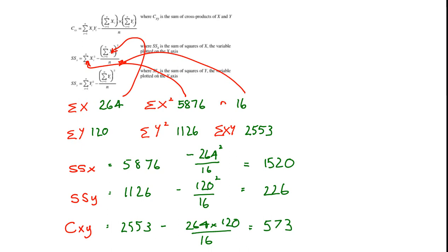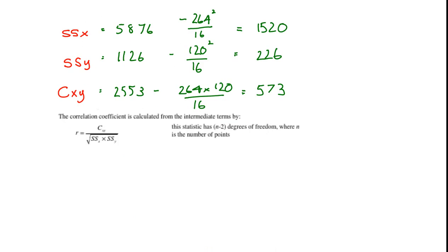Sum of squares x, 1520. Sum of squares y, 226. Covariance xy, 573. And those are the important numbers that we need. So we'll transfer those over to the next page.